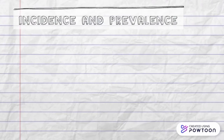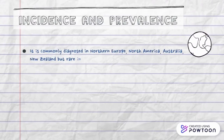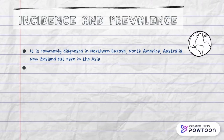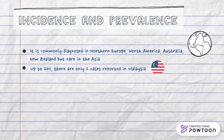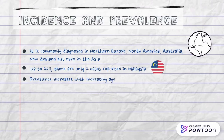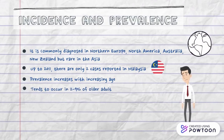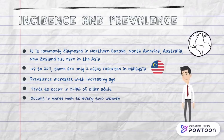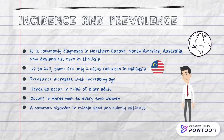Paget's disease is commonly diagnosed in Northern Europe, North America, Australia, and New Zealand, but is rare in Asia, including Malaysia. Up to 2011, there were only 2 cases reported in Malaysia. Prevalence increases with age, occurring in 2–9% of older adults, with a ratio of 3 men to every 2 women. It is a common disorder in middle-aged and elderly patients.